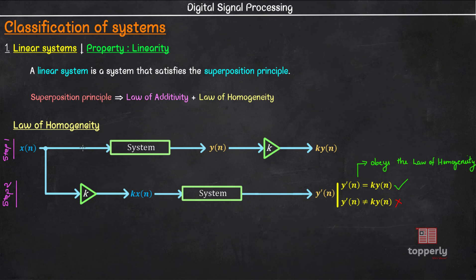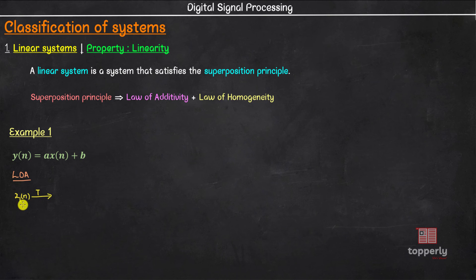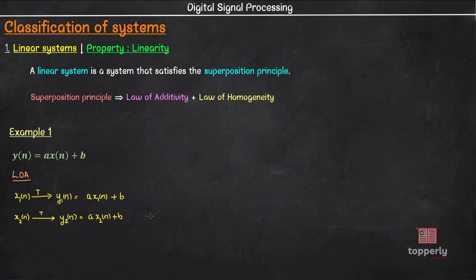Now let us take an example. Consider a system described by y(n) = a·x(n) + b. Our task is to check the linearity of the system. First let us check the law of additivity. Let us give an input x1(n) to the system. Based on the system equation, the system scales the input with scalar a and then adds scalar b. So the corresponding output is y1(n) = a·x1(n) + b. Similarly, for input x2(n), the output will be y2(n) = a·x2(n) + b.